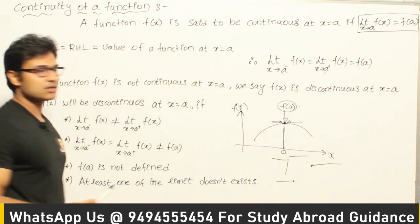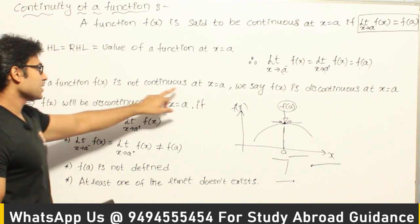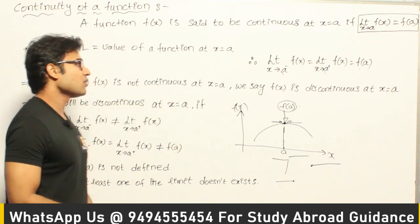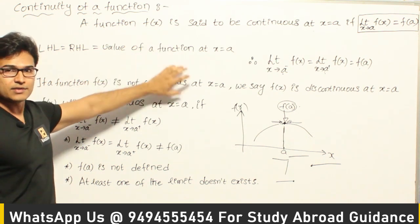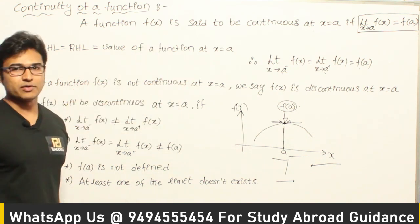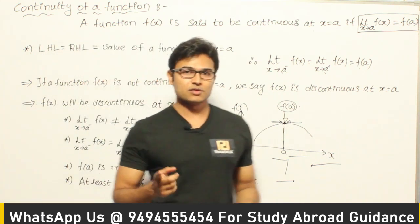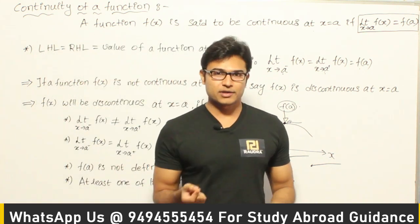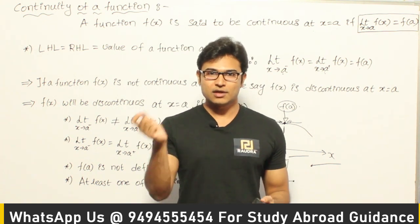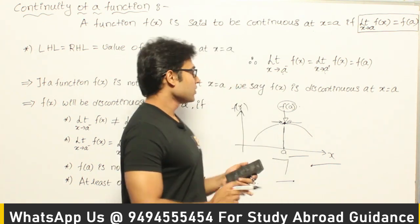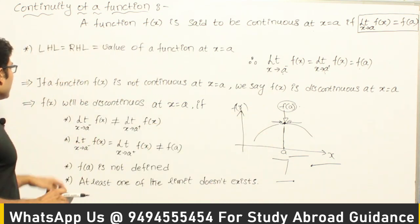If a function f is not continuous at x = a, we say f(x) is discontinuous — meaning if this property fails, then it is discontinuous at x = a. We are always talking about continuity or discontinuity given the function and a point; we don't say a function is continuous or discontinuous without specifying that point.